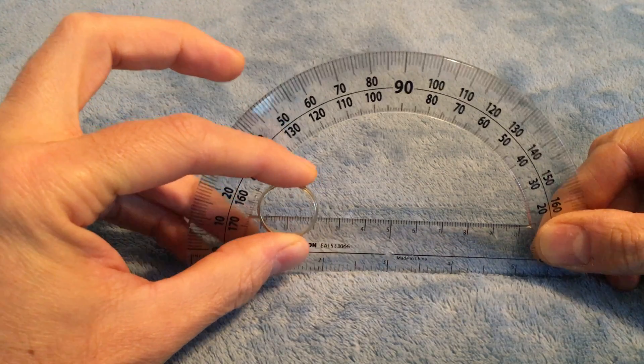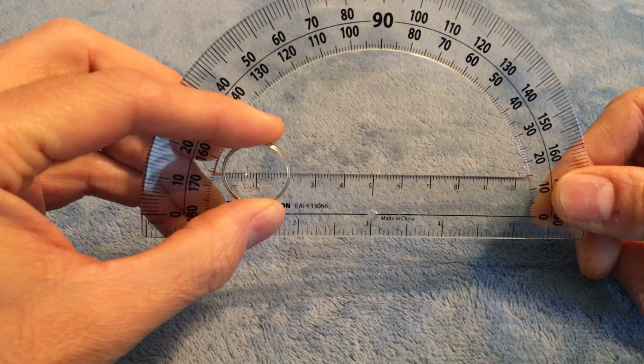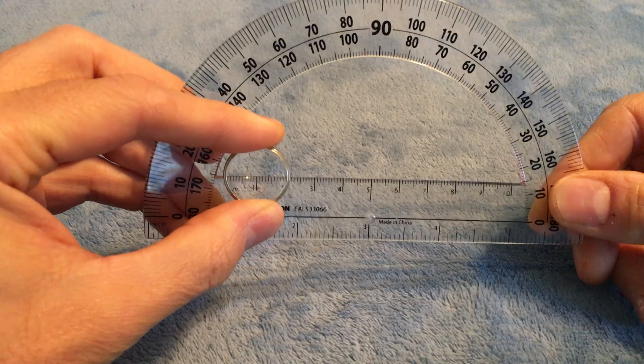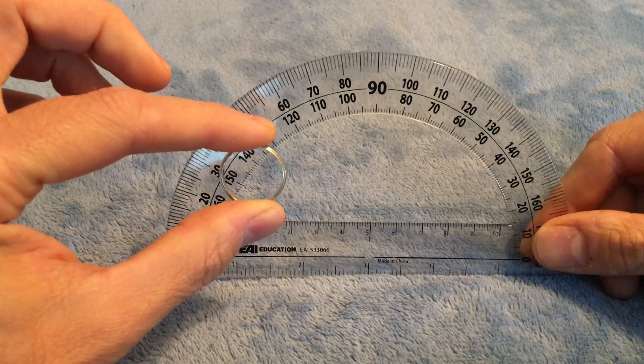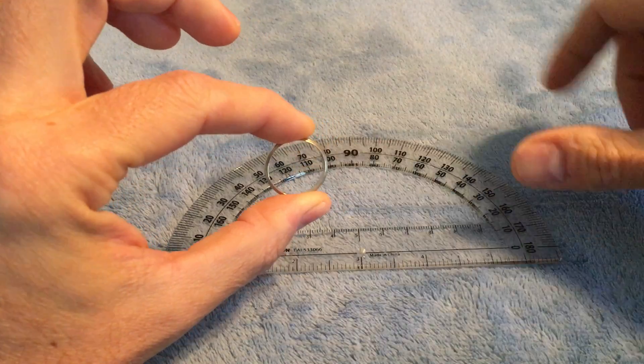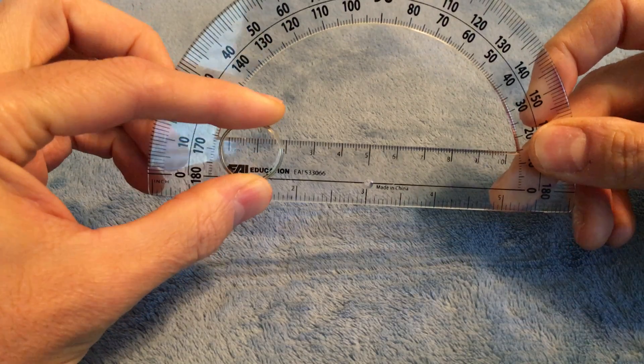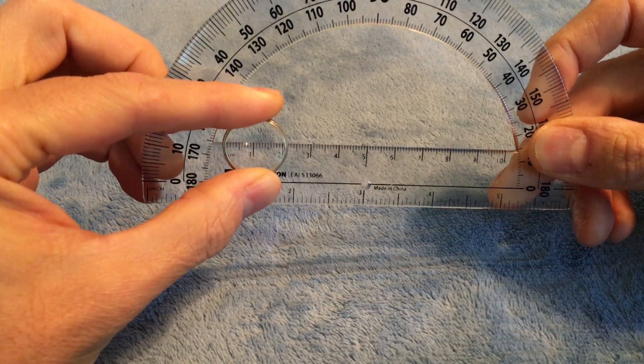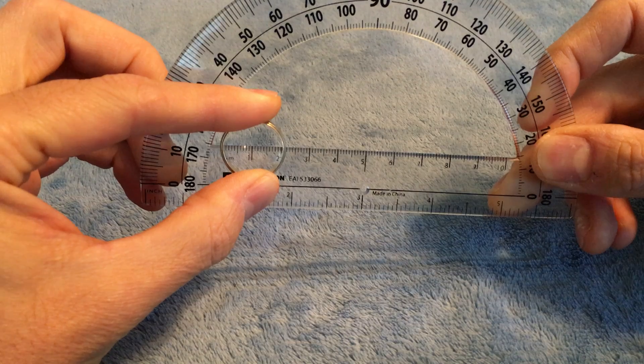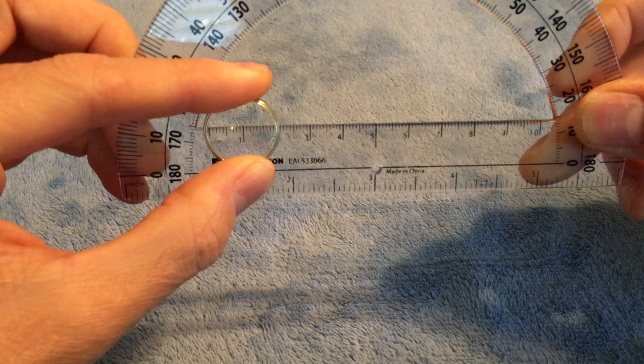This way to size is called the diameter method. Remember from school, the diameter is just the distance across the middle of a circle. From the inside you want to go to the inside to the inside. You want to use millimeters. This is a centimeter measuring stick.